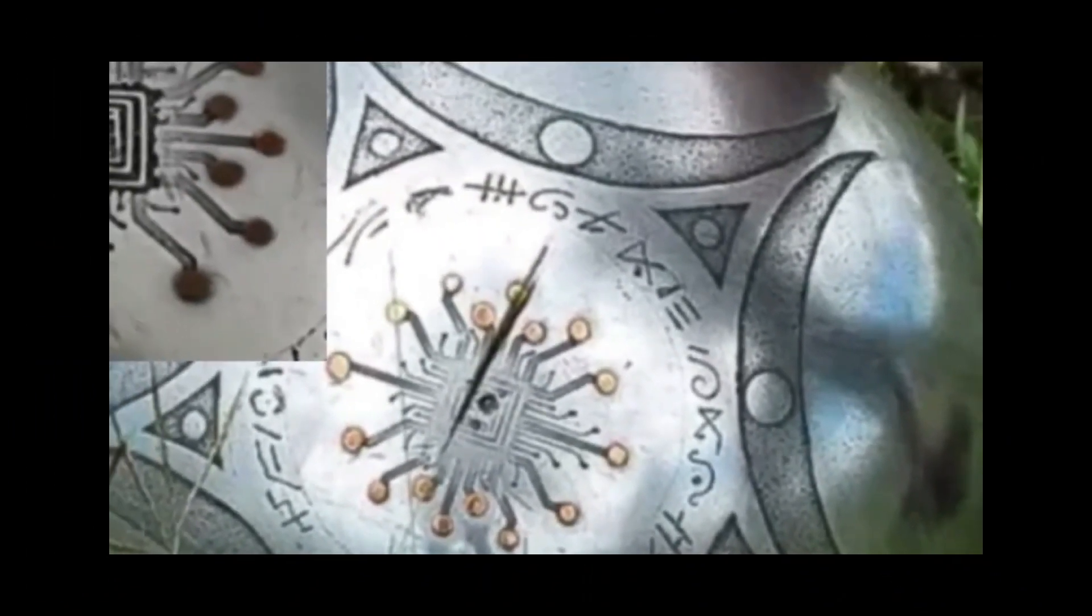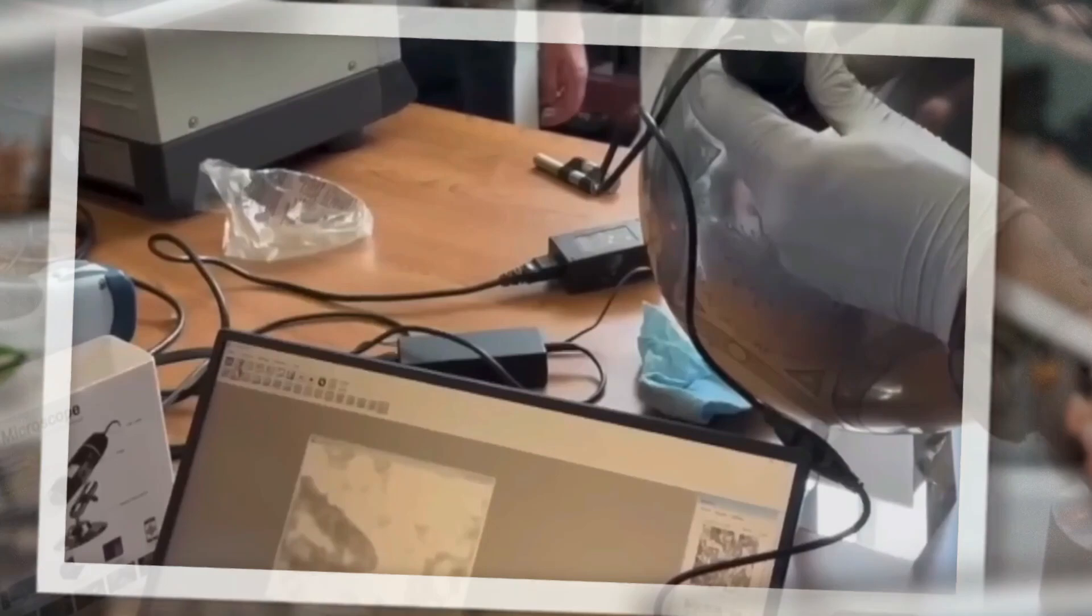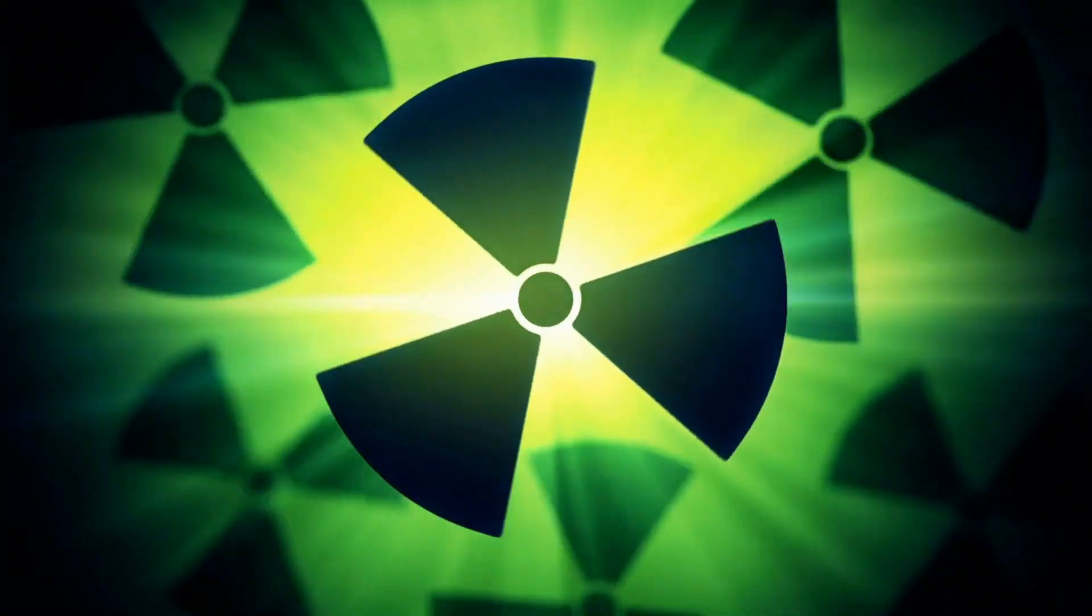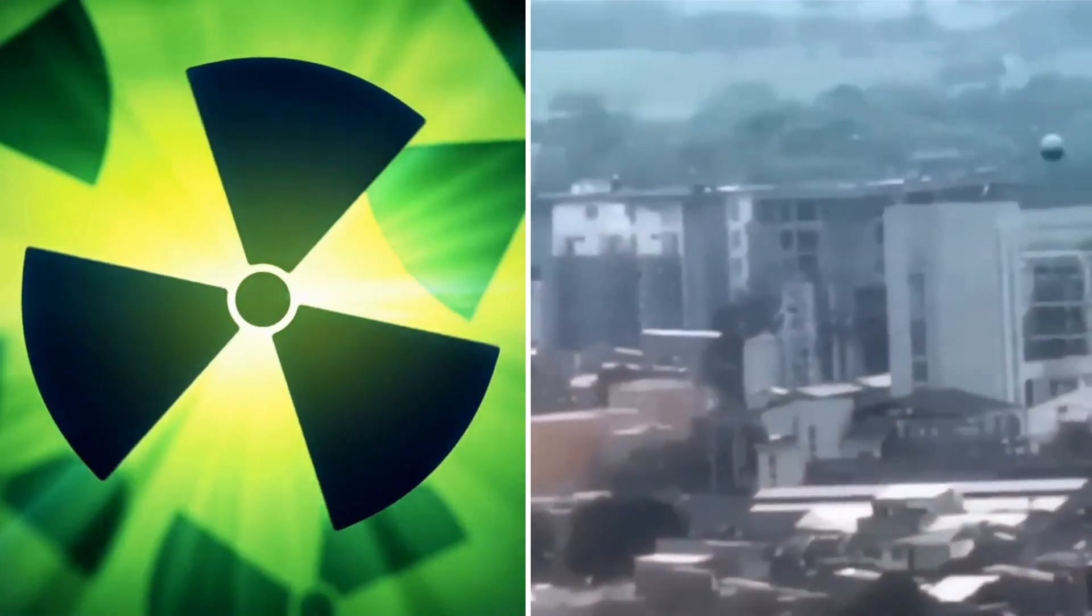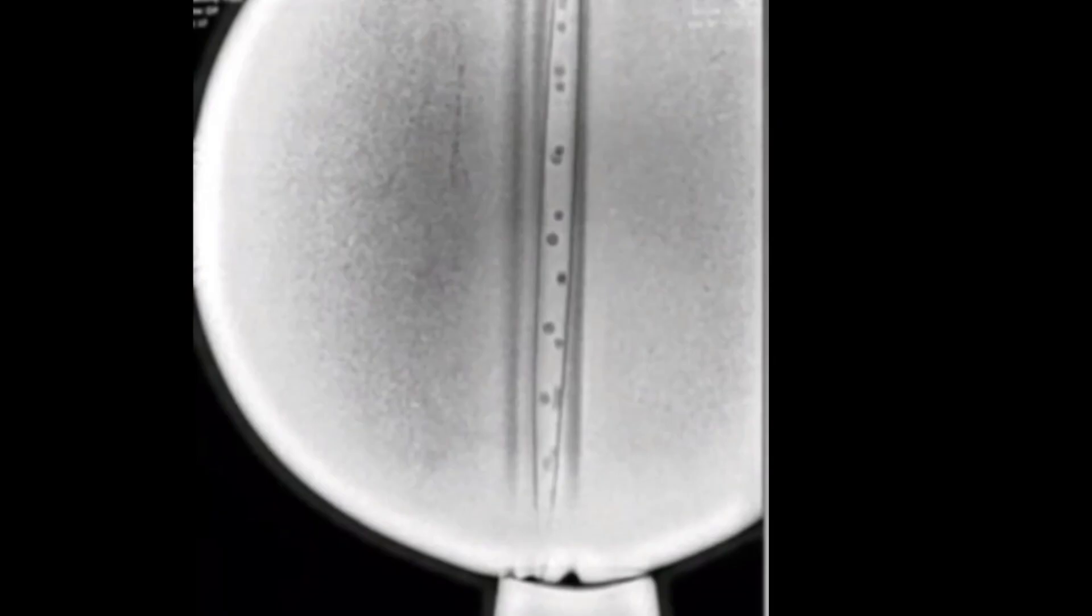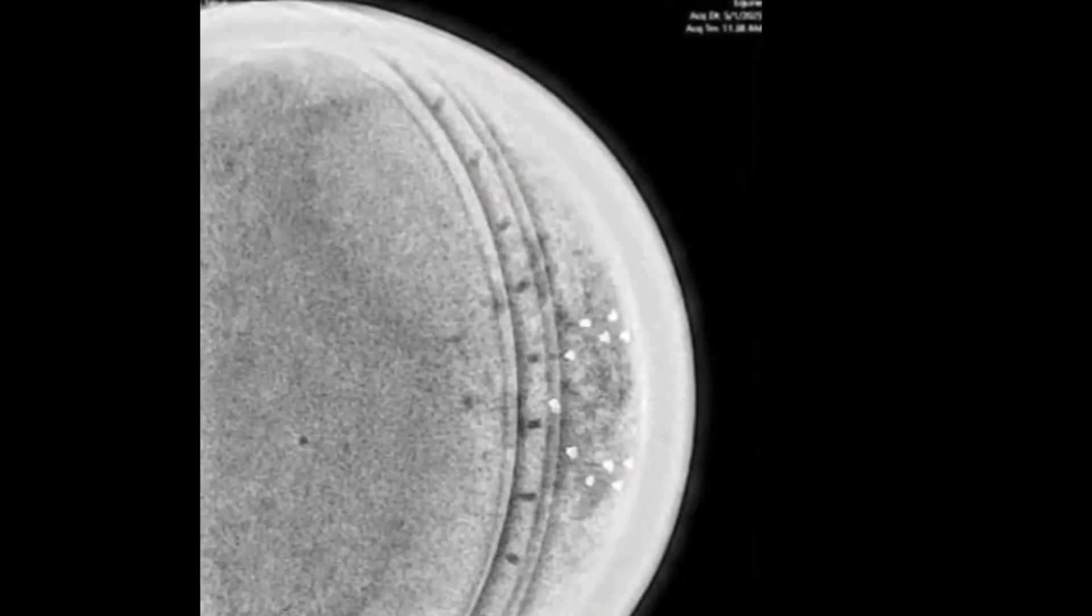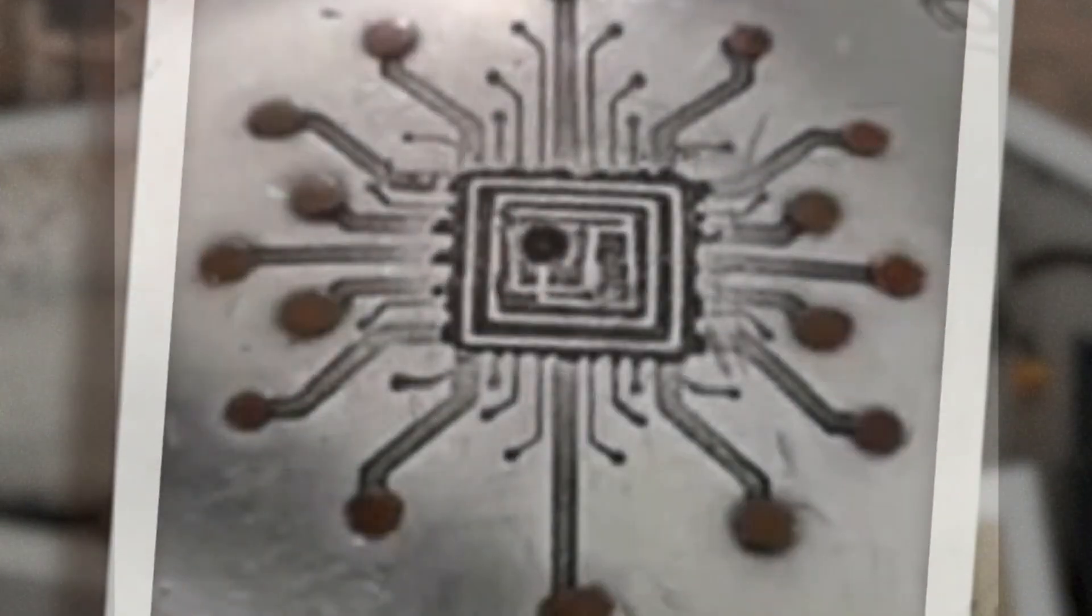For months, it lived under lights and microscopes while teams threw every instrument they had at it. X-rays mapped three concentric shells nested like Russian dolls. Between them, nine microspheres suspended as if gravity forgot them. At dead center, a chip. Too small to extract, too alien to classify.